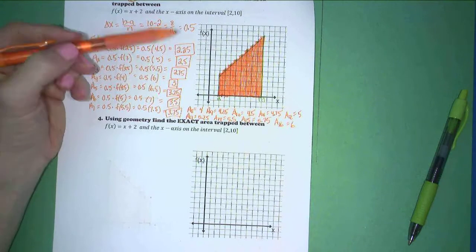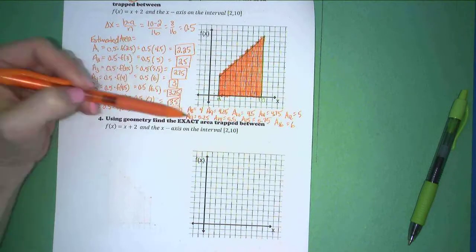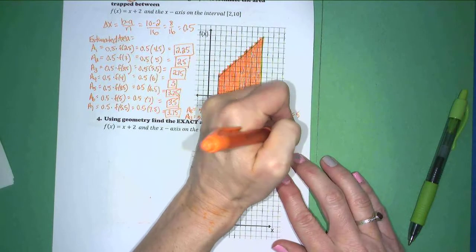Now, if I add all of these areas individually, if I add them together to get a grand total, we should be getting 66 units squared.